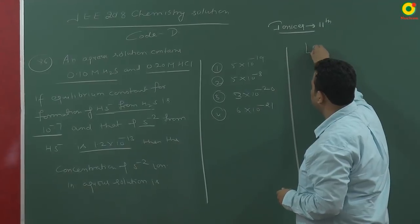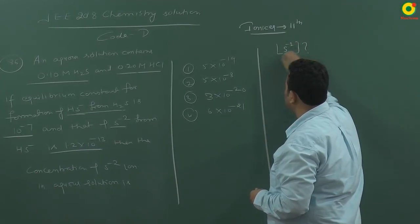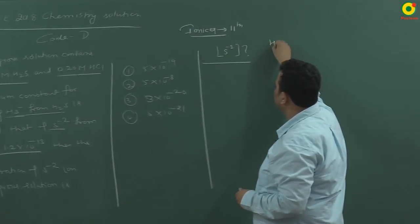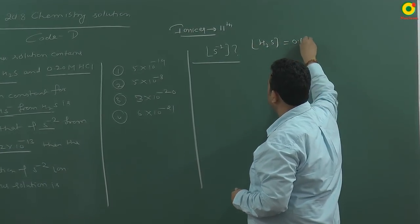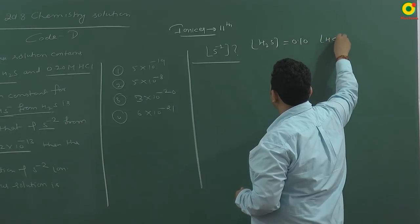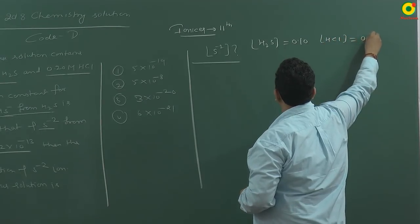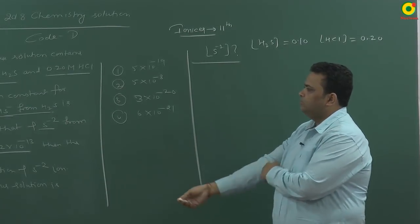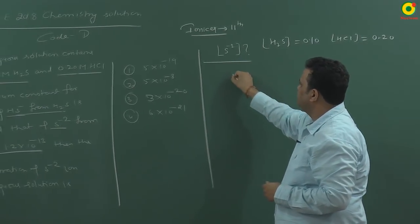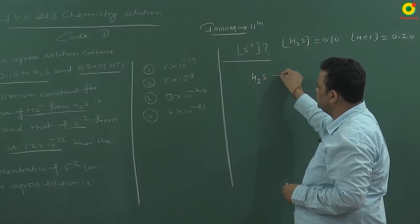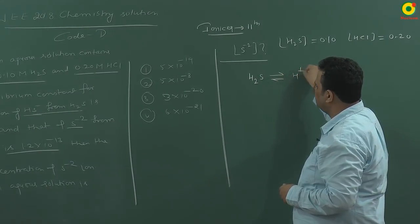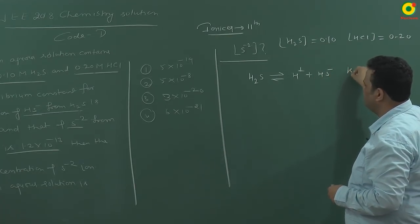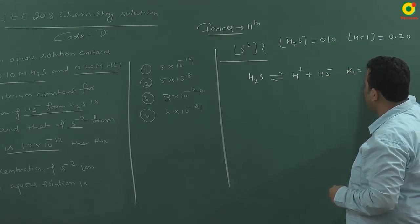In this question he is asking about S minus 2 concentration. It is given that H2S concentration is 0.10 and HCl concentration is 0.20. Equilibrium constant of formation of HS minus: H2S during first ionization gives H plus and HS minus, and K1 for this reaction is 10 to the power minus 7.